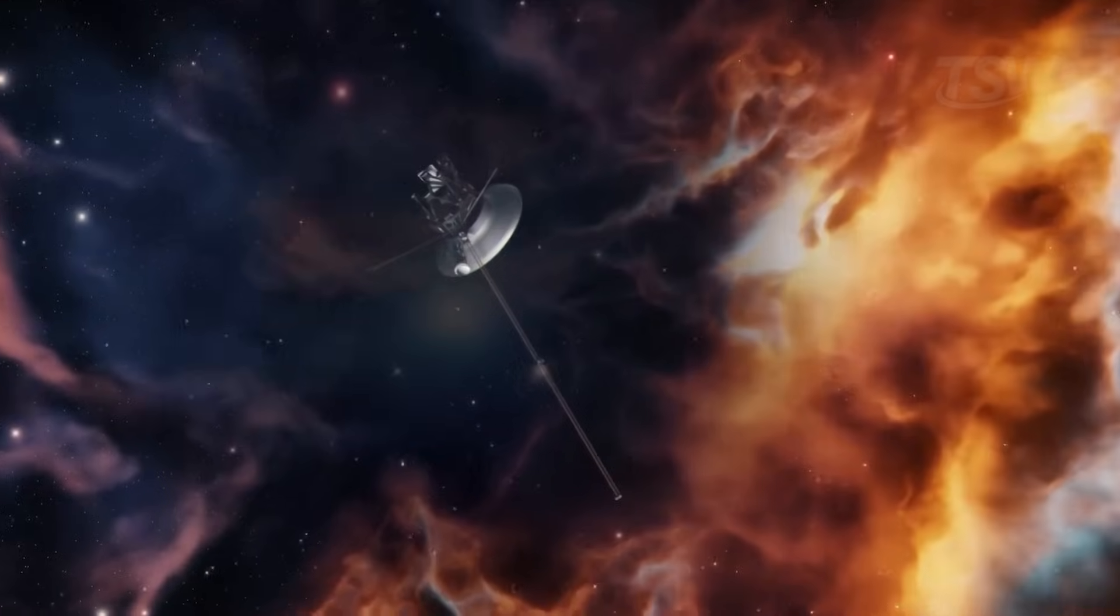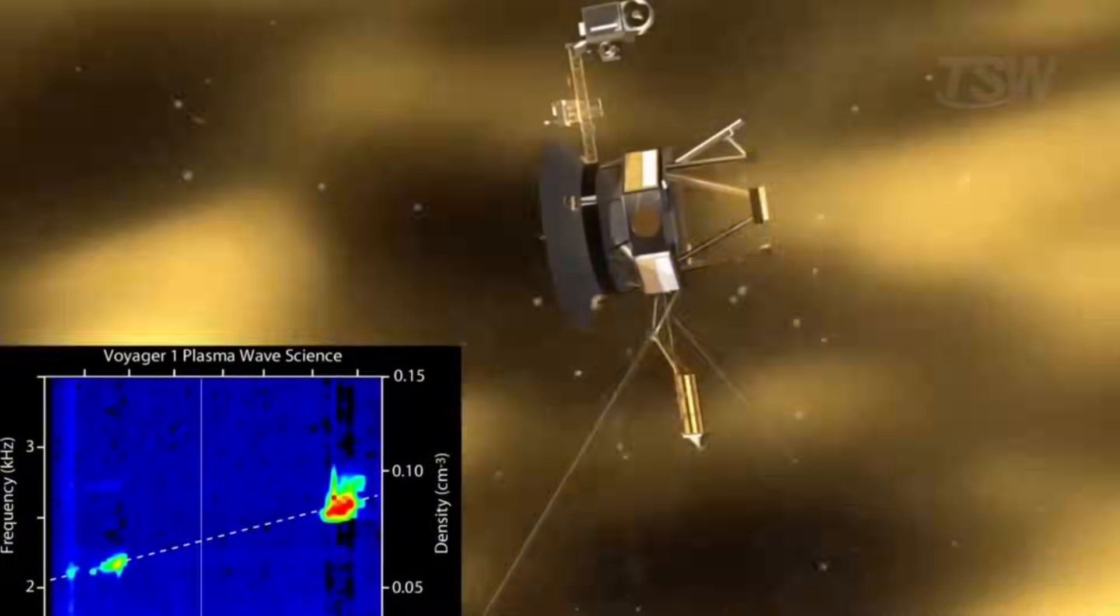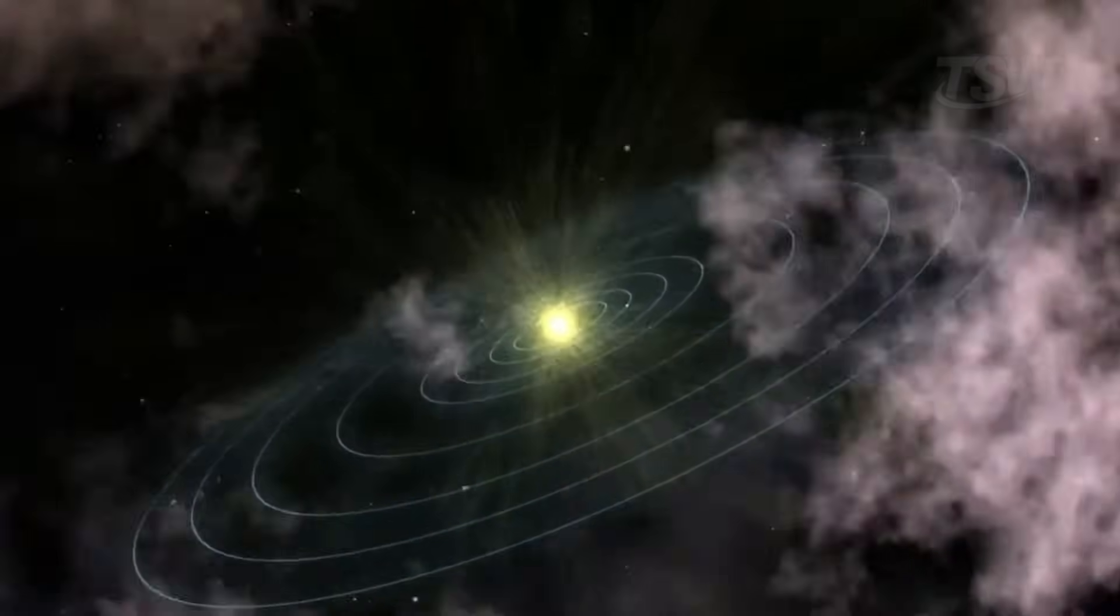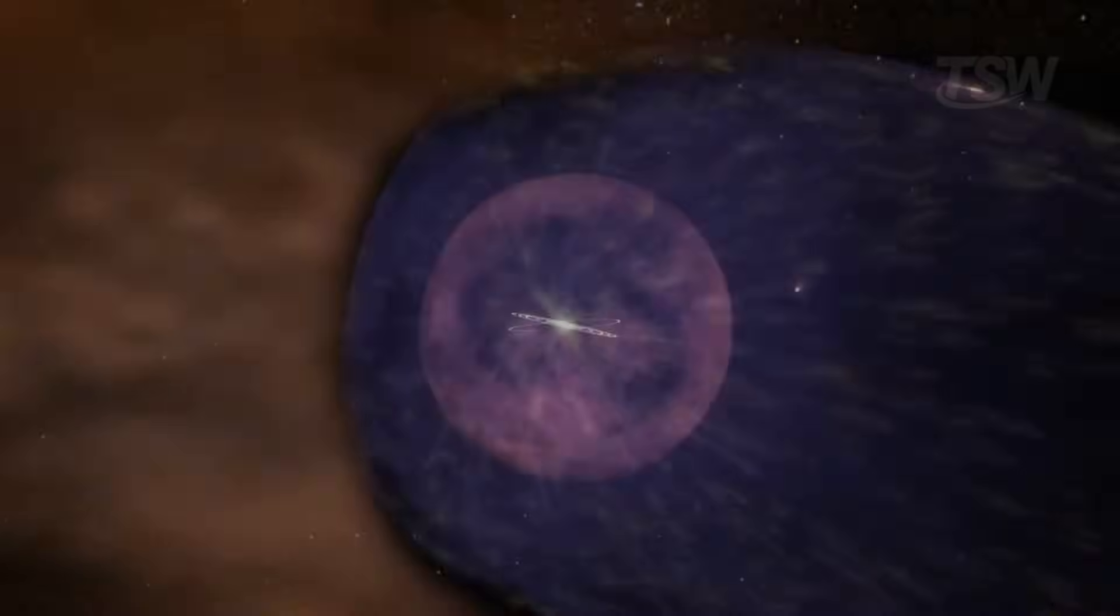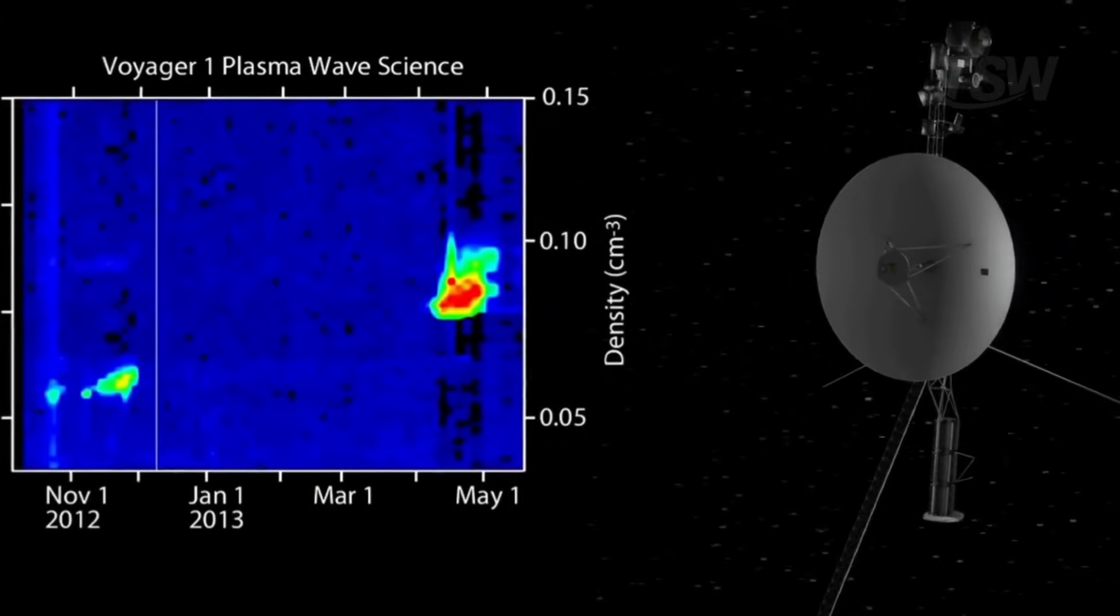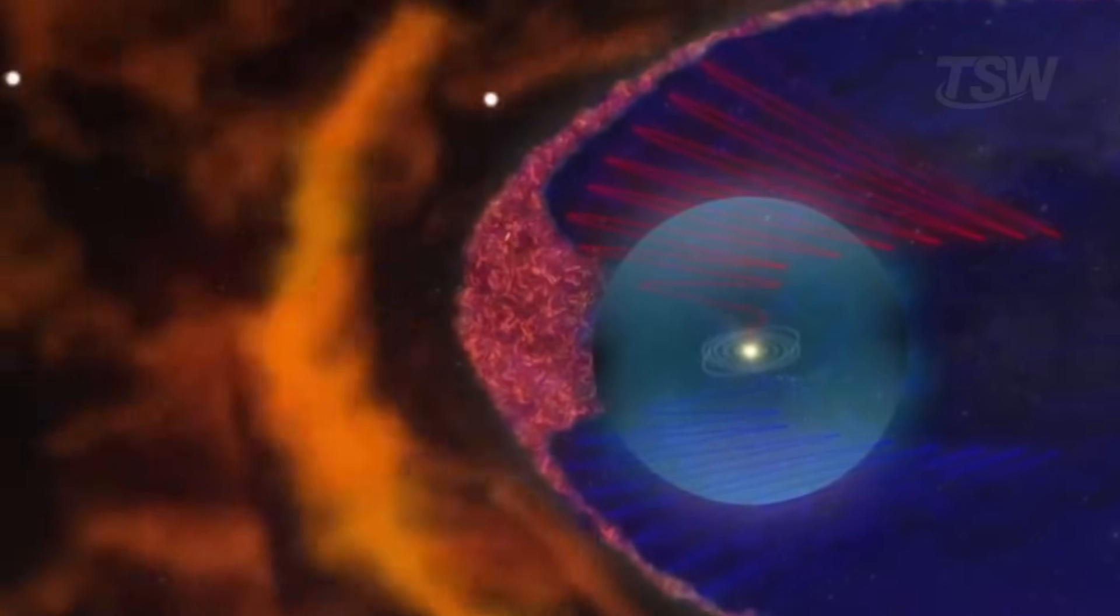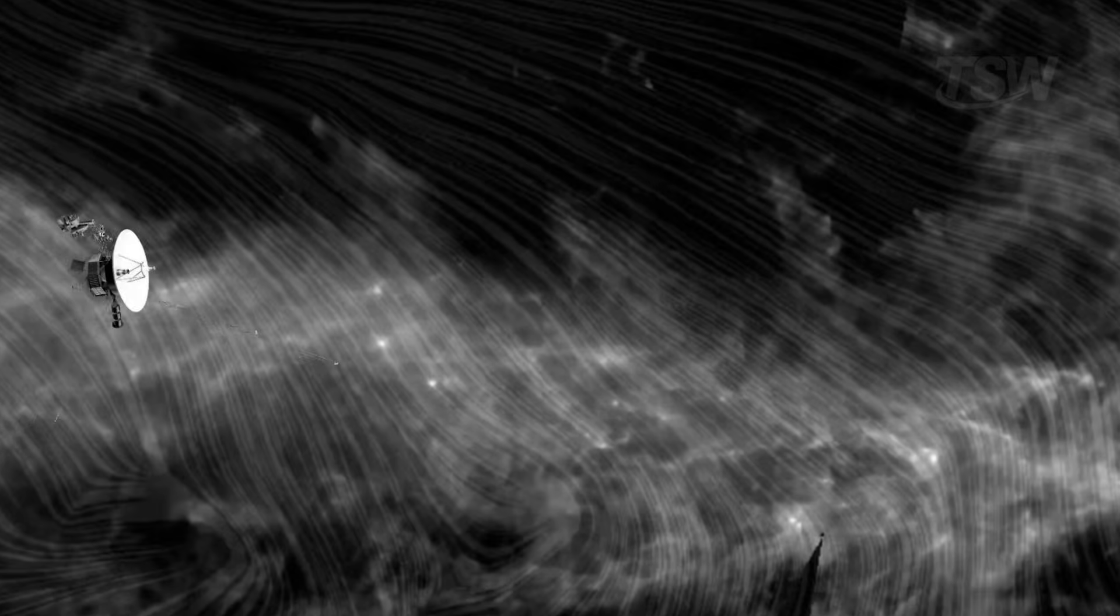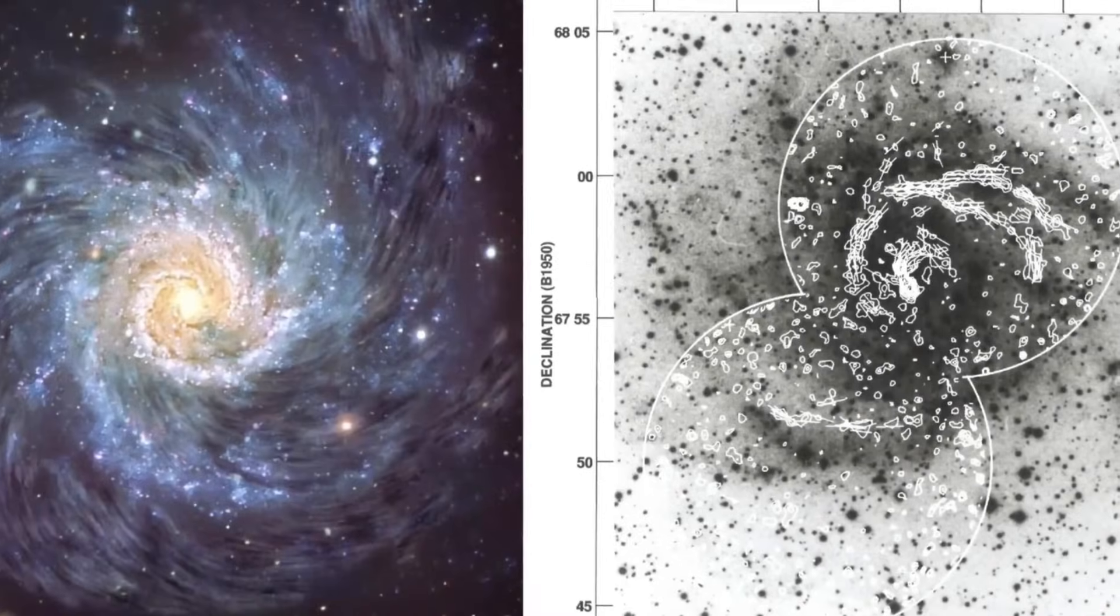The plasma wave system continues to listen to the density of the surrounding plasma, recording how the rarefied matter responds to disturbances and how the sun's influence dissolves with distance. These numbers refine our understanding of the edge of the heliosphere, the region where charged particles coming from the sun meet the galactic environment. The probe's magnetometer measures the intensity and direction of local magnetic fields, feeding models of the Milky Way's magnetic structure and helping explain the paths cosmic rays prefer to take. Small variations, when accumulated over time, reveal patterns and stresses we would not see otherwise.